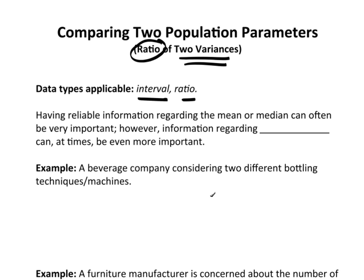Having reliable information regarding the mean or the median is really quite often extremely important. However, information regarding the variability can at times be even more important.